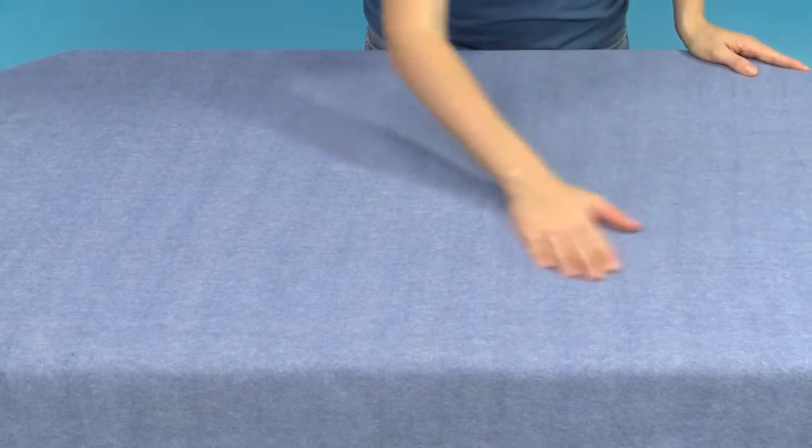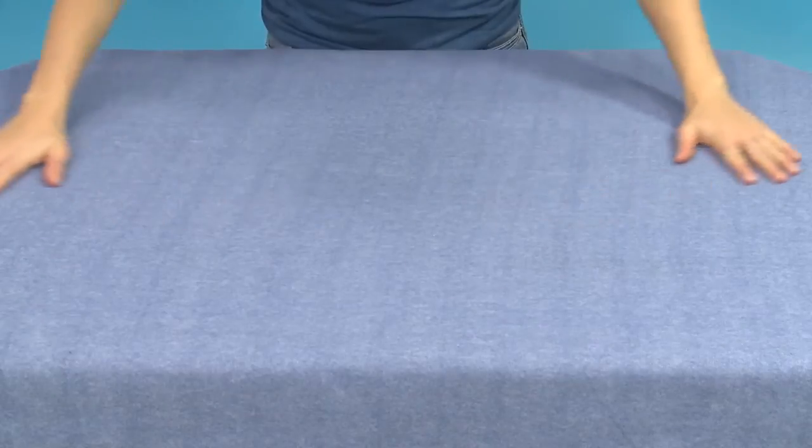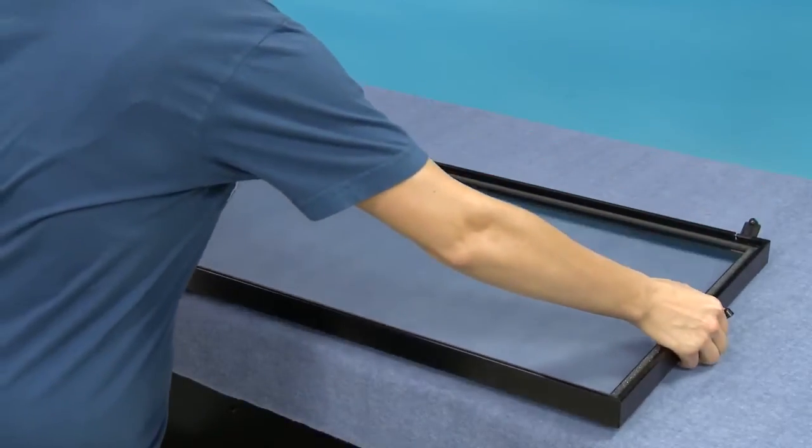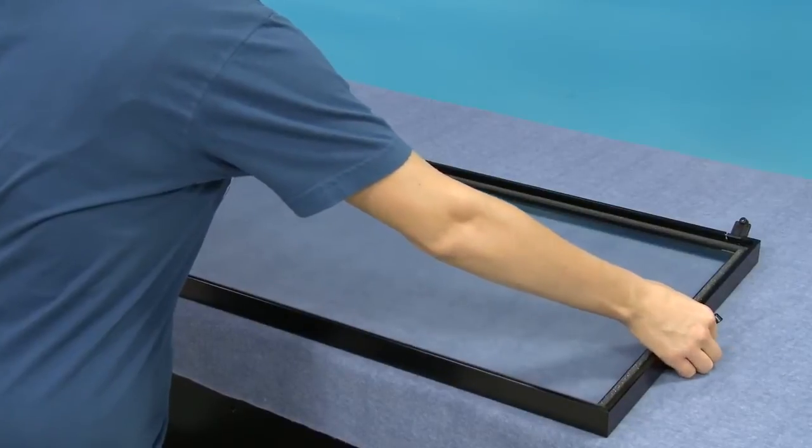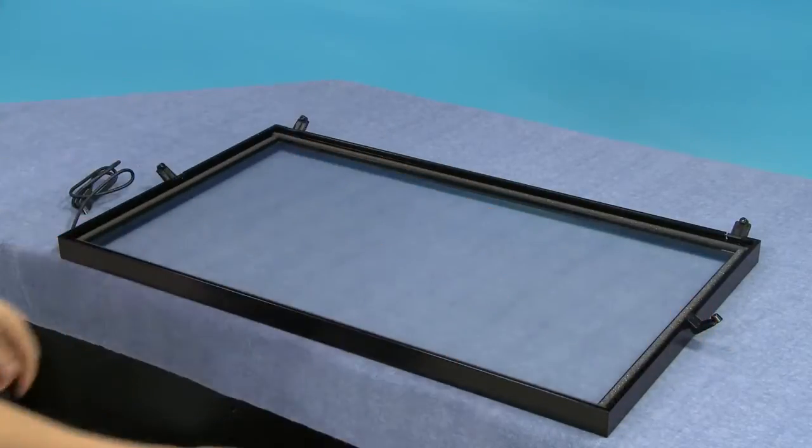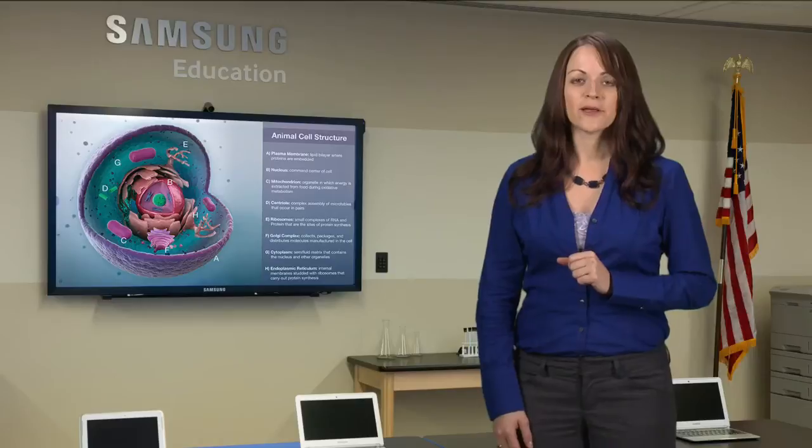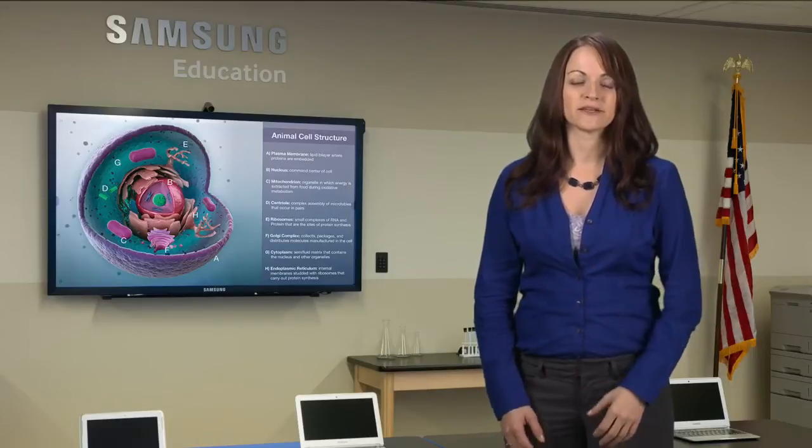Before you begin, carefully place the overlay on a protected surface to prevent damage. If you have the stand already attached to the display, you'll need to place the overlay close to the edge of the table in order to install the display. Also, be aware of the bottom of the overlay. The USB cable should be on the bottom left. This will help prevent an upside-down installation.